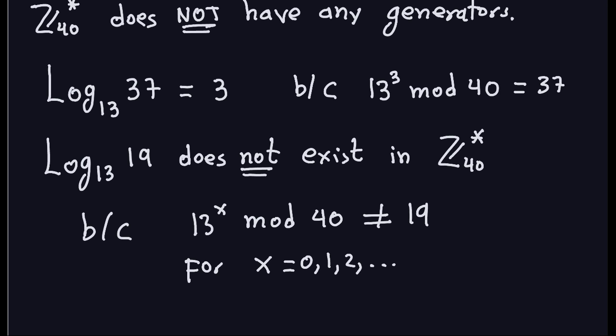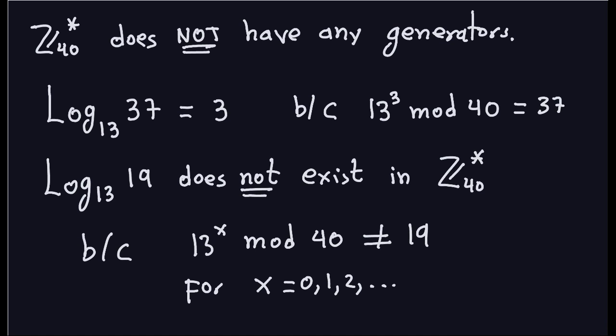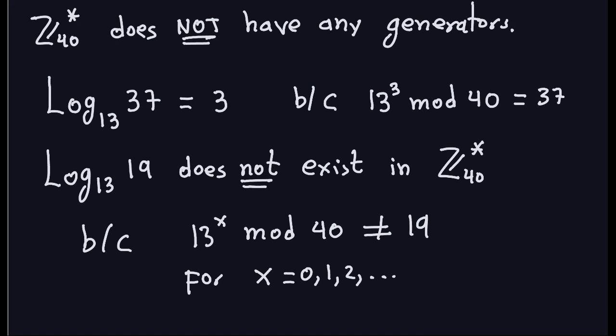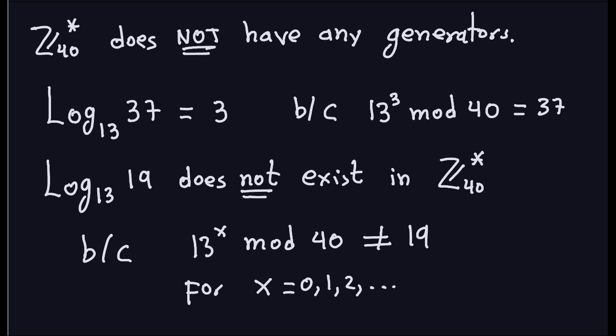The generalized discrete log in non-cyclic groups is not what we use in cryptography. For the Diffie-Hellman key exchange, we work in cyclic groups, specifically ones derived from prime numbers. All the concepts we covered here will be used when we discuss the Diffie-Hellman key exchange in the next videos.